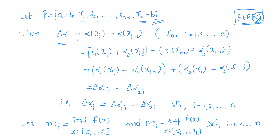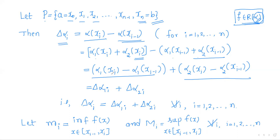We calculate Δαᵢ. By definition, Δαᵢ = α(xᵢ) − α(xᵢ₋₁). But α(xᵢ) = α₁(xᵢ) + α₂(xᵢ) and α(xᵢ₋₁) = α₁(xᵢ₋₁) + α₂(xᵢ₋₁). Grouping the α₁ terms and α₂ terms: α₁(xᵢ) − α₁(xᵢ₋₁) = Δα₁ᵢ and α₂(xᵢ) − α₂(xᵢ₋₁) = Δα₂ᵢ. So for every i, Δαᵢ = Δα₁ᵢ + Δα₂ᵢ.